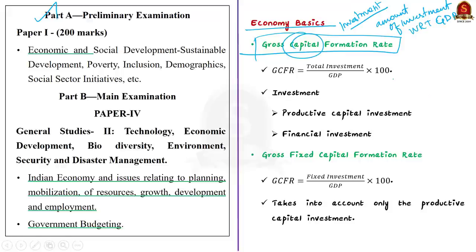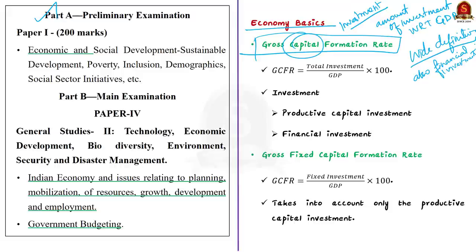According to our budget, the term capital has a very wider definition. In a general sense, capital includes not just productive capital investment like building roads and constructing factories, but also financial investment like central government loans to state governments. So just by looking at the gross capital formation rate value, we cannot determine the actual productive investment made in the economy.